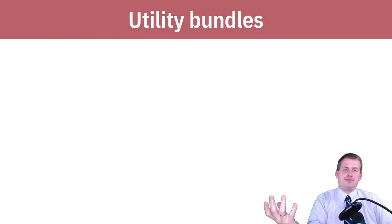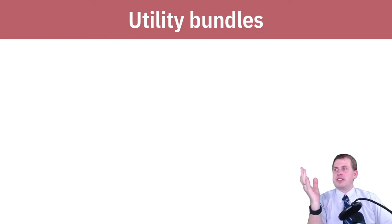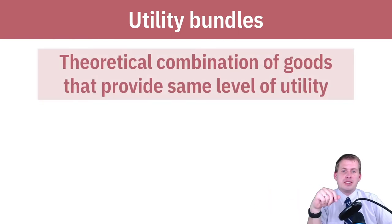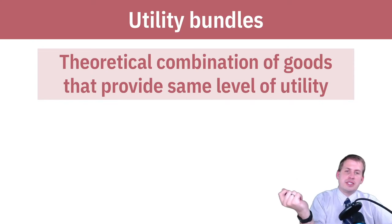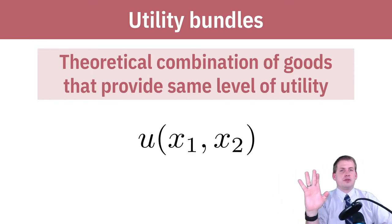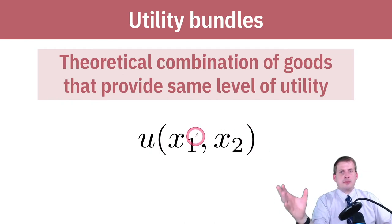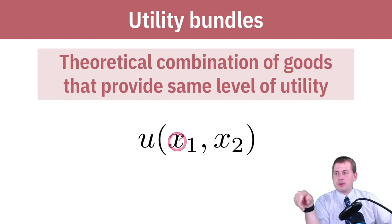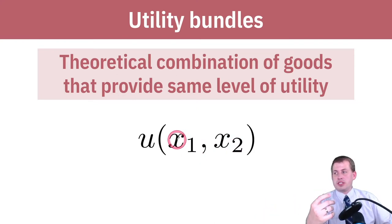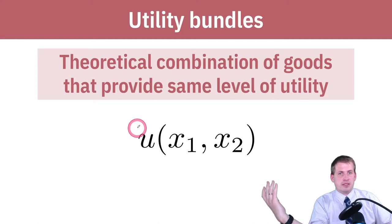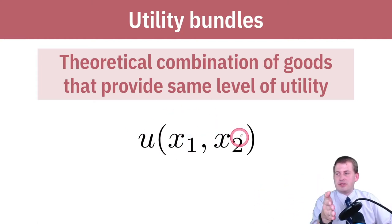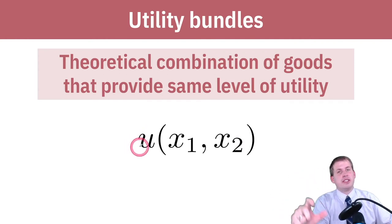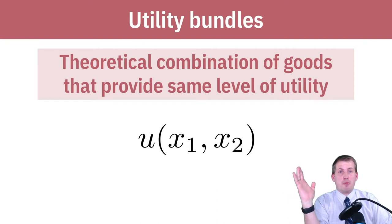This brings us to the idea in economics called the utility bundle — it sounds fancy but it's just a combination of two things that gives you happiness. It's some theoretical combination of goods that provides the same level of utility. We're introducing some math formulas here, but a utility function is simply something you feed inputs into and it spits out happiness. Here, x1 is some good like ice cream, x2 is another good like pizza, and consuming some number of each spits out some level of utility.